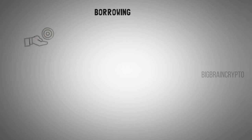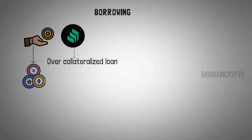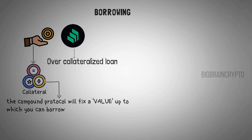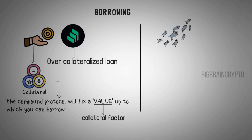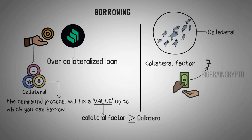Now we shall see about borrowing. When someone wants to borrow an asset, the Compound Protocol only offers over-collateralized loans. That means if you want to borrow, you need to show your collateral. Depending upon the collateral, the Compound Protocol will fix the value up to which you can borrow. This value is determined by various factors and is called the collateral factor. To put it simply, if you want to borrow and provide 10 fish as collateral and the factor is set at 7, then you can borrow for the value of 7 fish. This factor will never exceed or equal the collateral — this is called an over-collateralized loan.